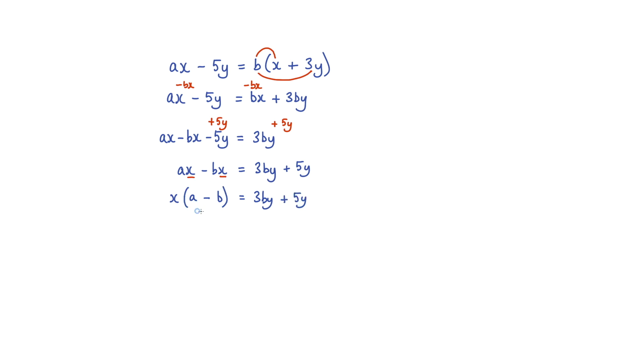The last step is to eliminate this a minus b term. That's multiplied by the x, so all I need to do is to divide by a minus b here, and also divide by a minus b on the right hand side. Let me just write that in full. We're dividing by a minus b here and dividing by a minus b here. Well, this a minus b here cancels with this one. So I'm just left with x, and that is equal to 3by plus 5y, over a minus b.